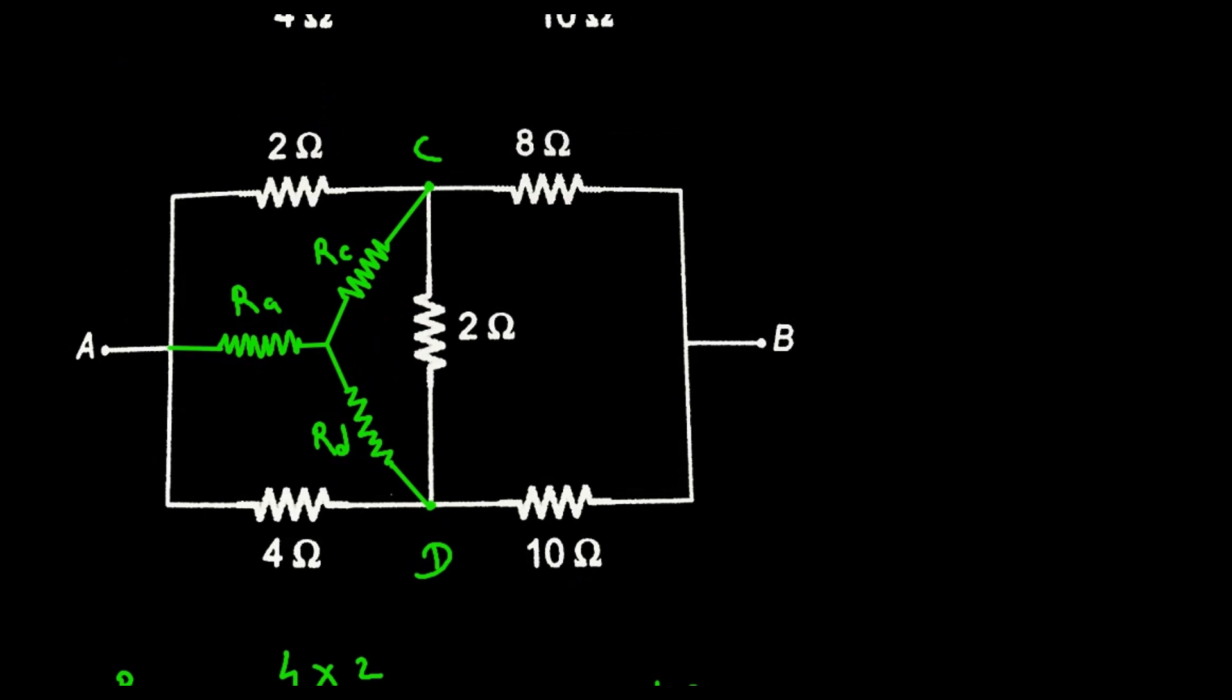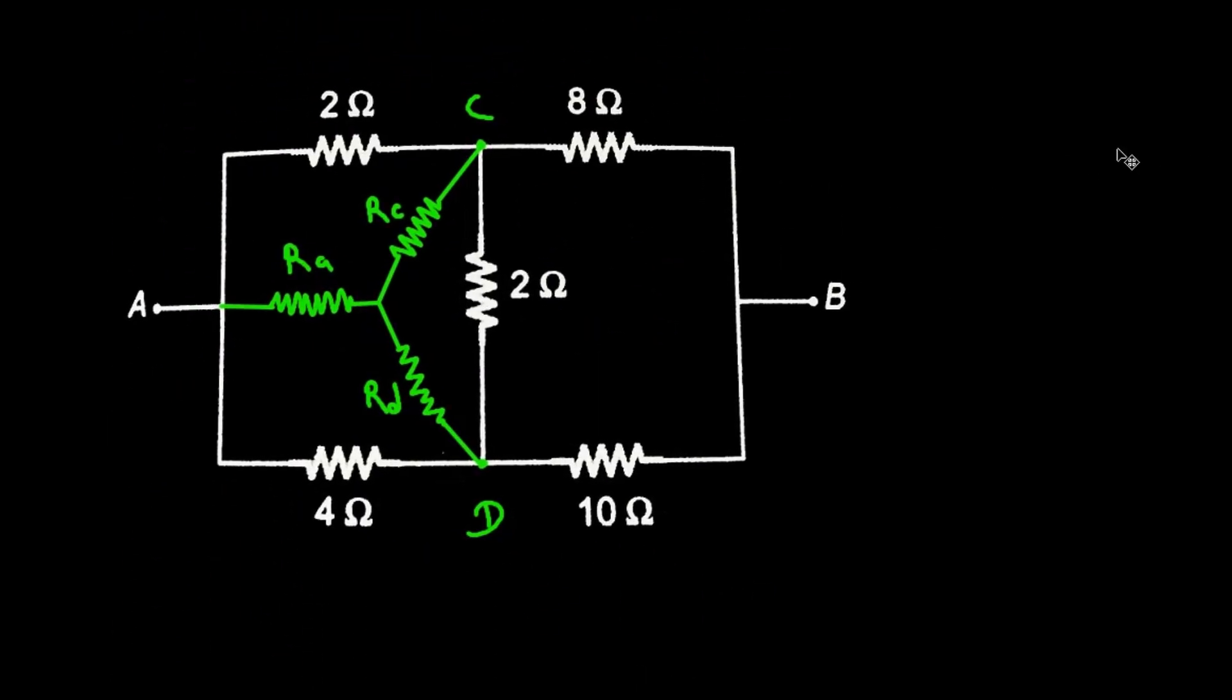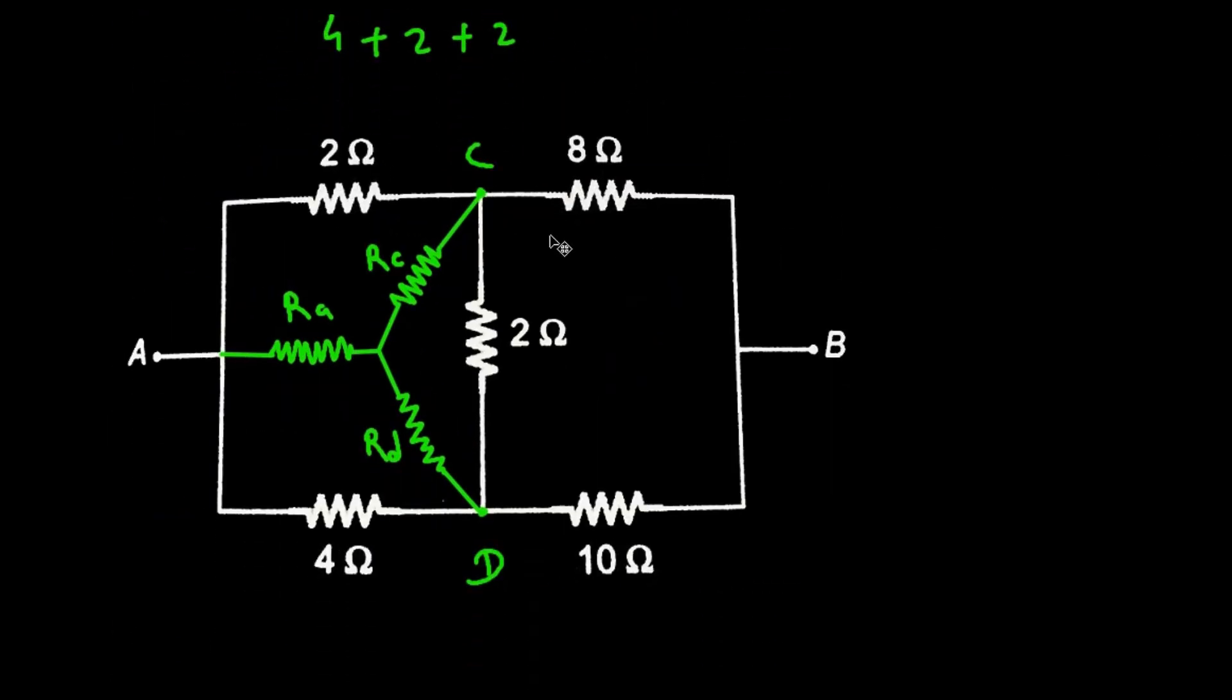So now we can copy this network from here and we can paste it. Now since we are converting from delta to star, we can erase these resistances. Finally our network will look like this.